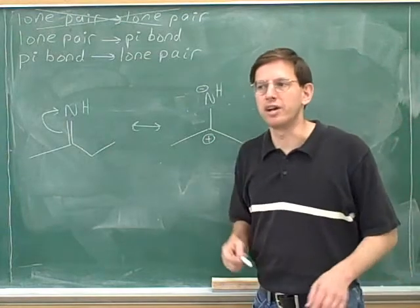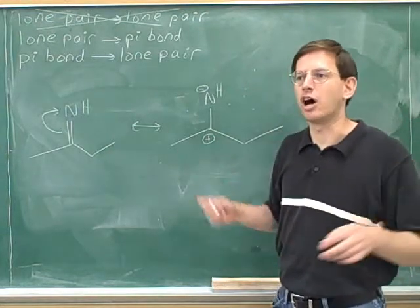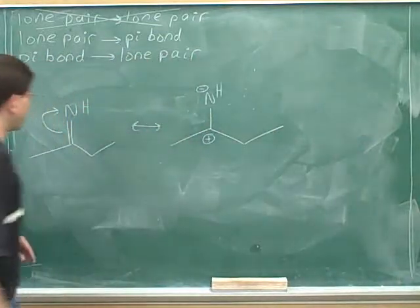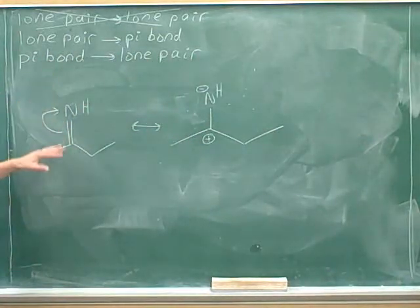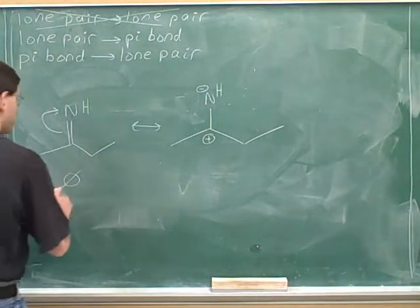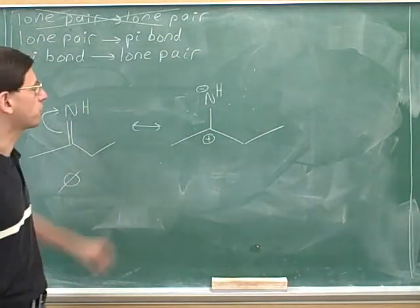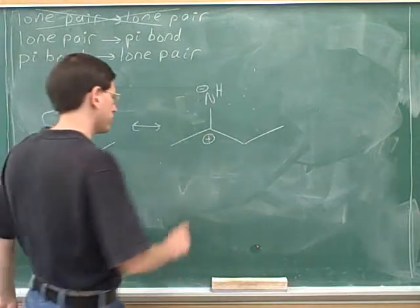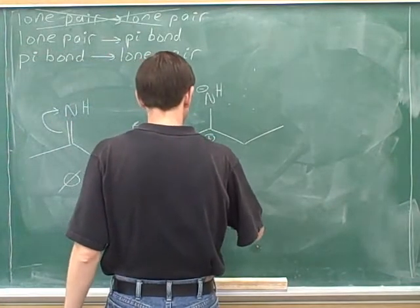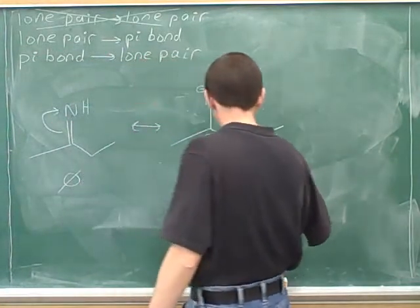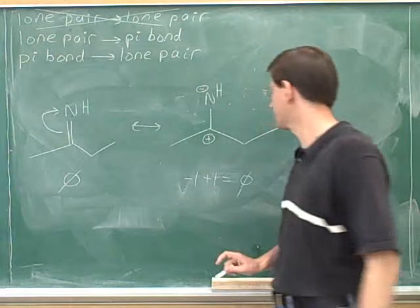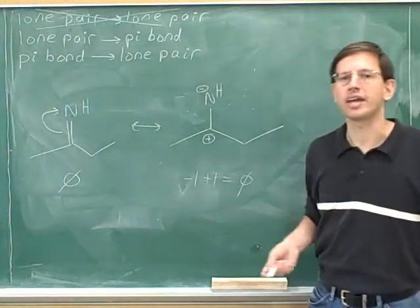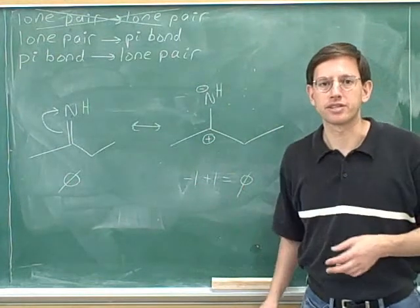Remember that our new technique is to always make sure that the net charge is balanced. What was the net charge in our left-hand structure? There was a negative one charge and a positive one charge, so the net charge is zero. The net charges are the same — that confirms that we got this correct.